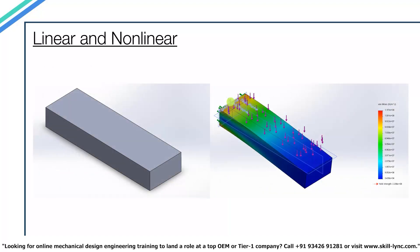Consider a cantilever beam with dimensions XYZ where a force of 100 N is applied on the top portion. This causes a deflection in the beam. The developed stress is well within the yield strength of the beam. This is a perfect example of linear analysis.